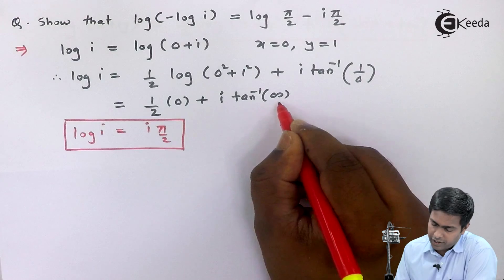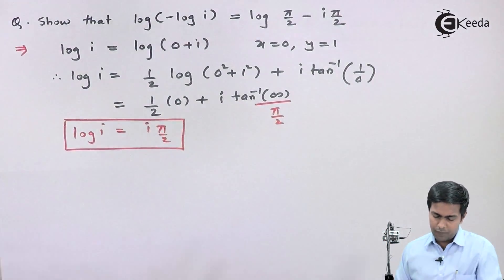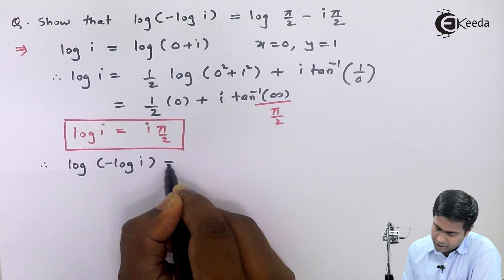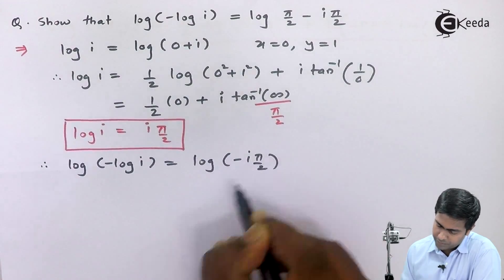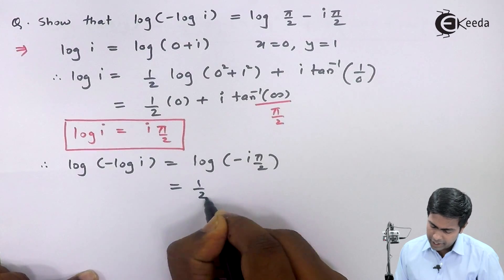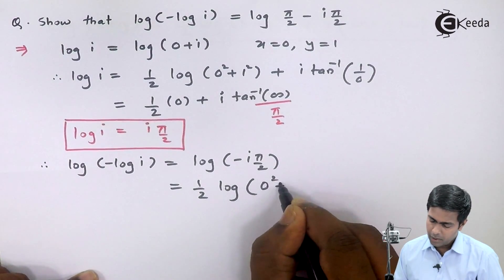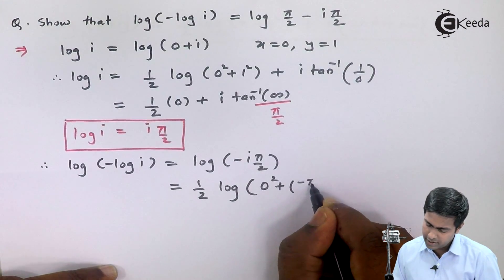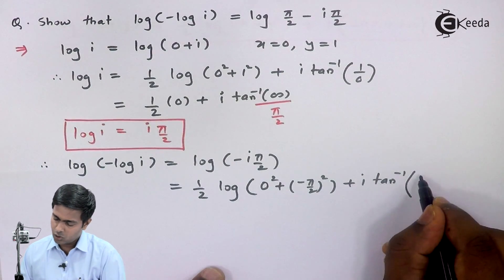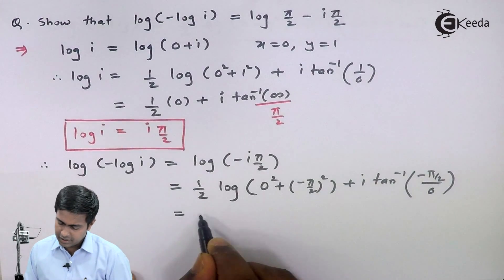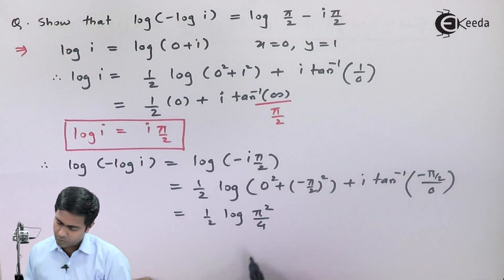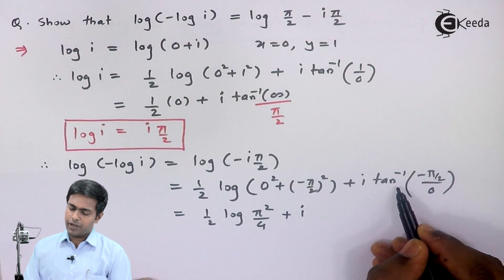Now we use this value in the left-hand side. So log of minus log i becomes log of minus i pi by 2. Again we apply the log of complex number formula: one half log of x squared plus y squared, where x equals 0 and y equals minus pi by 2. So we get one half log of 0 squared plus minus pi by 2 the whole squared, plus i tan inverse of minus pi by 2 divided by 0. Simplifying: the square of pi by 2 is pi squared by 4, giving one half log of pi squared by 4.